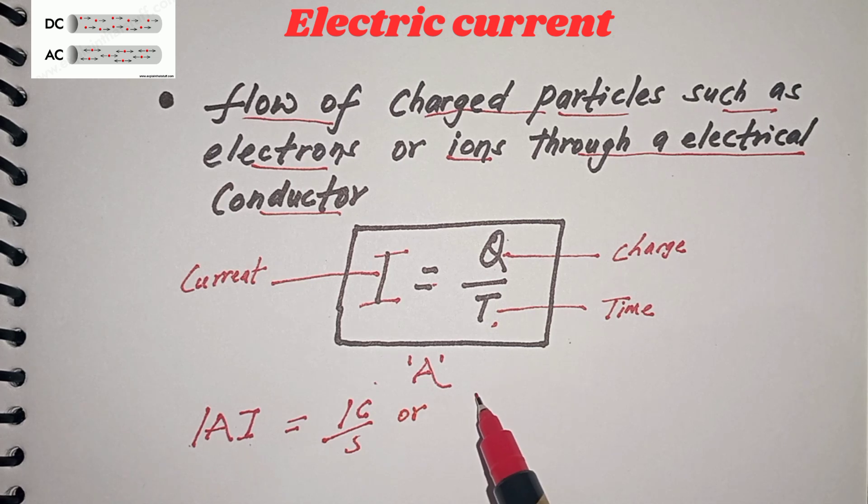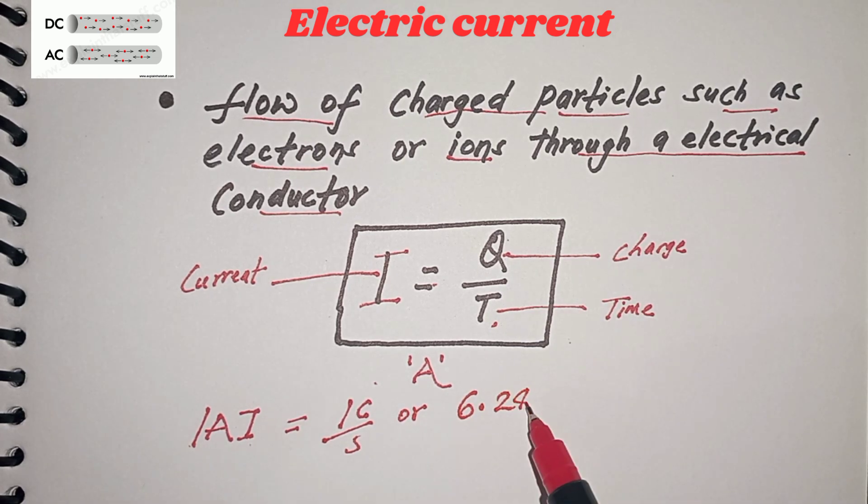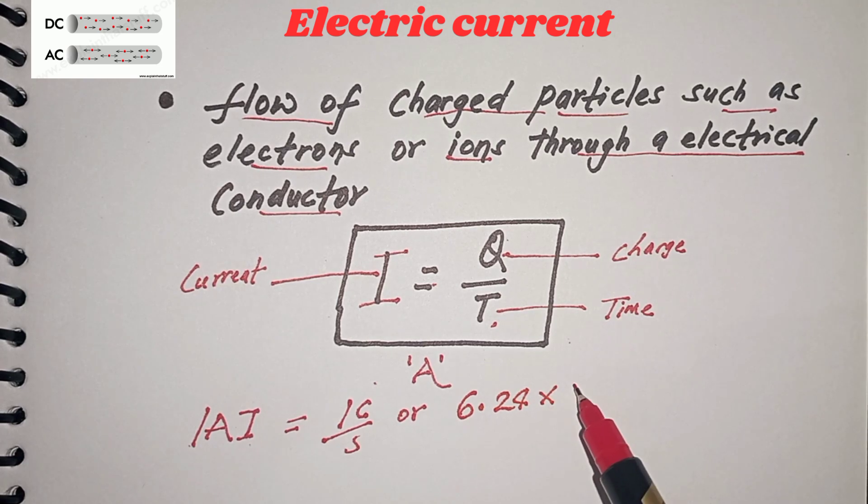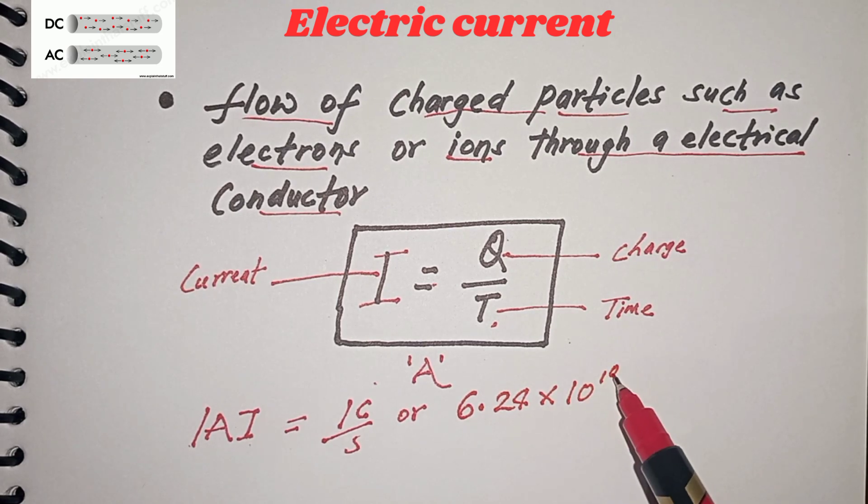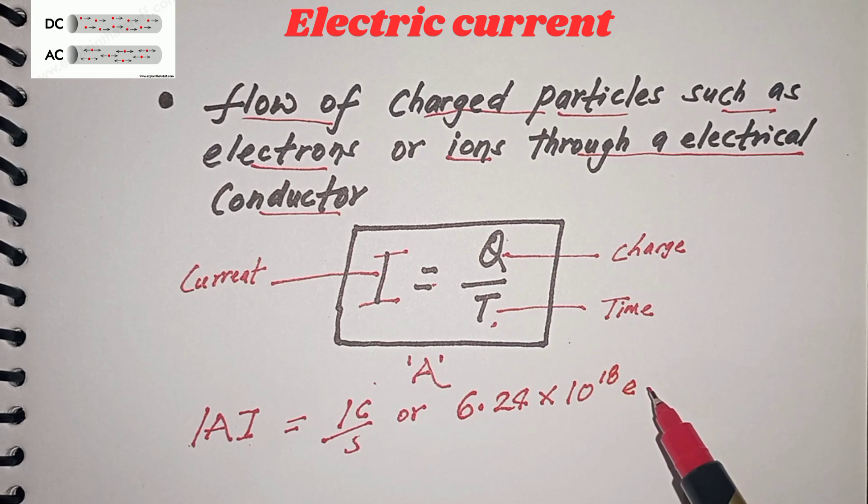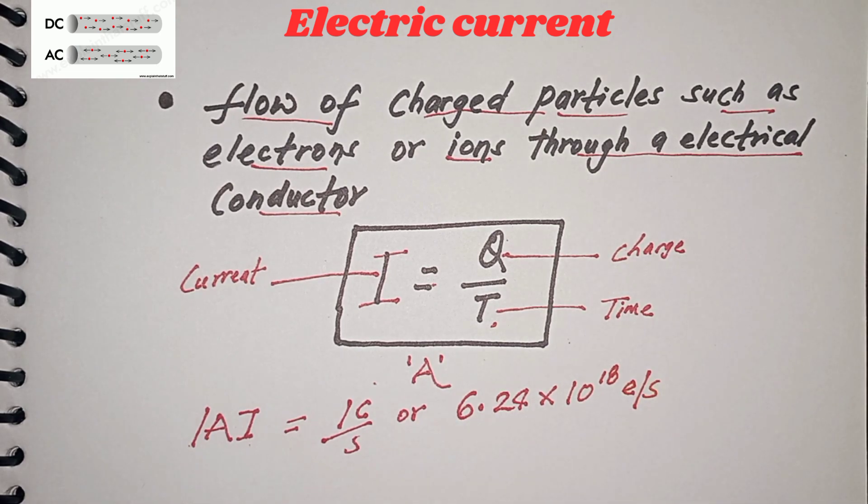a flow of 6.24 × 10^18 electrons per second. I hope you guys have understood this video.